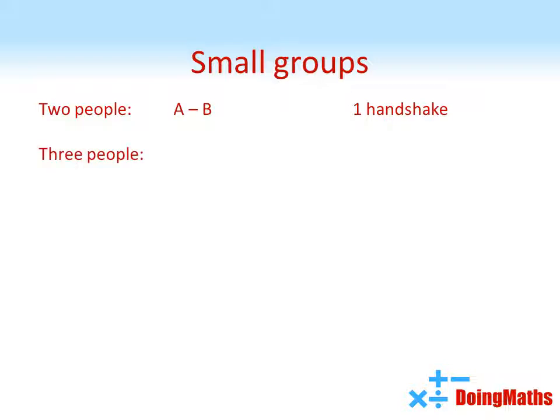What about if there are three people in the group? We'll call them A, B and C. Well A has to shake hands with B and C. B then needs to shake hands with C. That's everybody done. We've needed three handshakes.